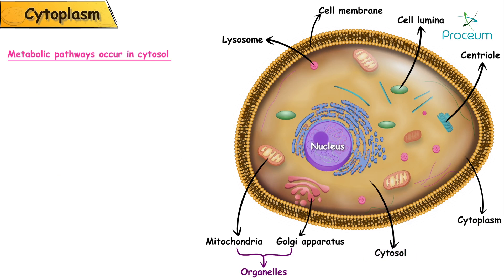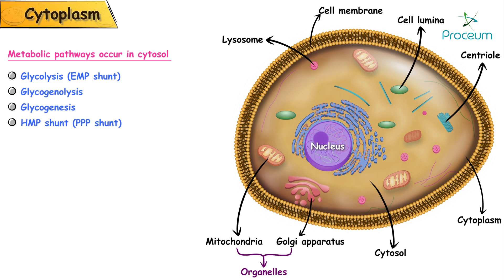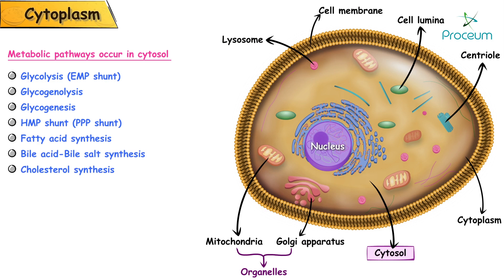Metabolic pathways occurring in the cytosol outside the organelles include: glycolysis via the EMP shunt, glycogenolysis, glycogenesis, the HMP shunt, fatty acid synthesis, bile acid and bile salt synthesis, and cholesterol synthesis — all occurring in the cytosol.